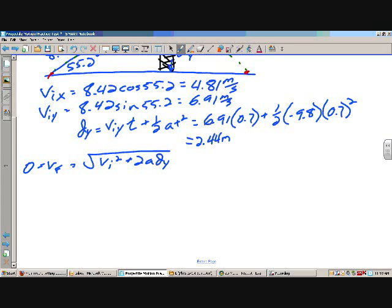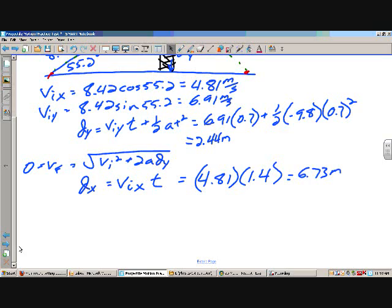The x displacement - how far did it go? Initial velocity in x times time. At this point a lot of people did know we want to use the 1.4 seconds, and it works out to be about 6.73 meters.